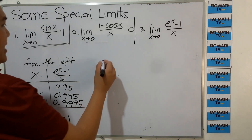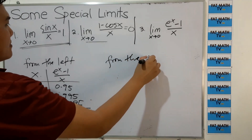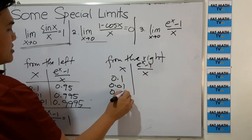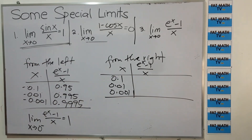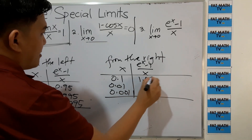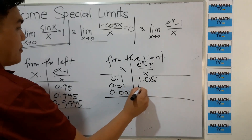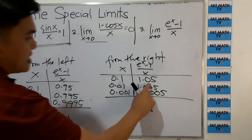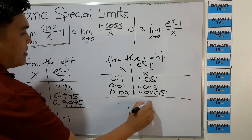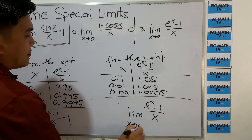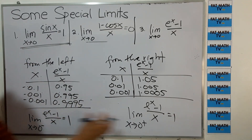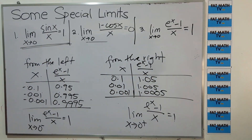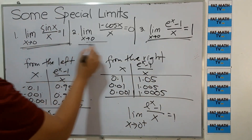From the right, using x equals 0.1, 0.01, and 0.001, we get values of 1.05, 1.005, and 1.0005. These values also approach 1, so the limit of e raised to x minus 1 over x as x approaches 0 from the right is 1. Since both one-sided limits equal 1, the two-sided limit is also 1. You should remember these three special limits.